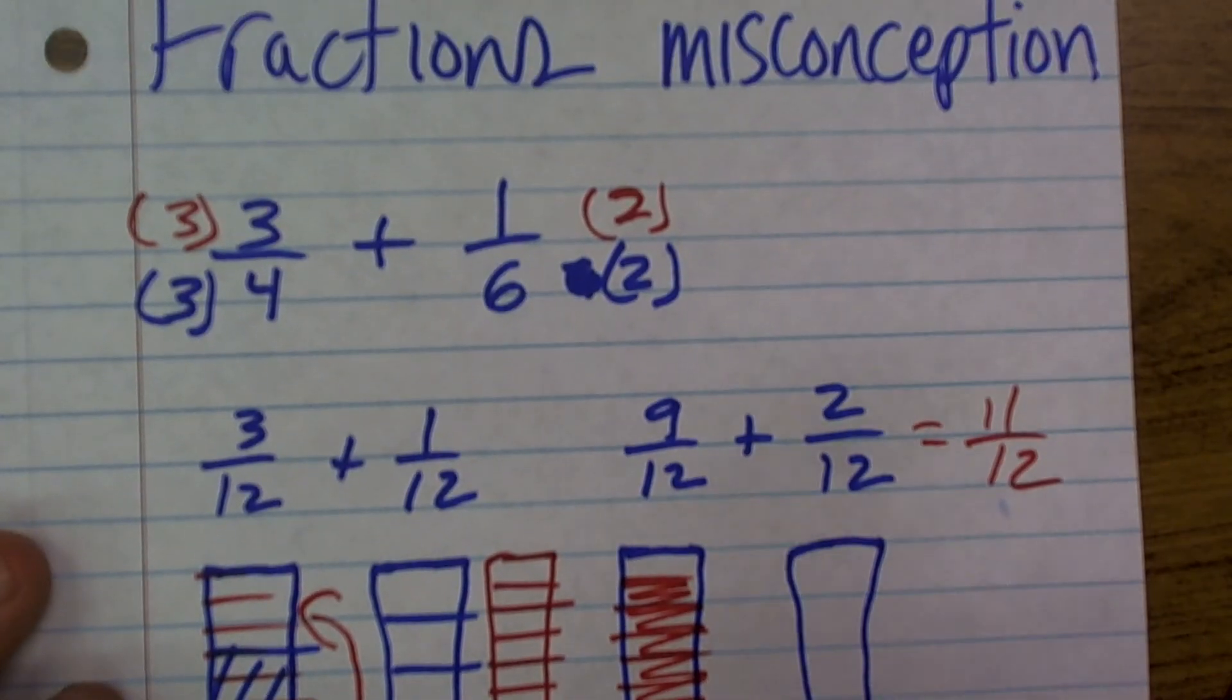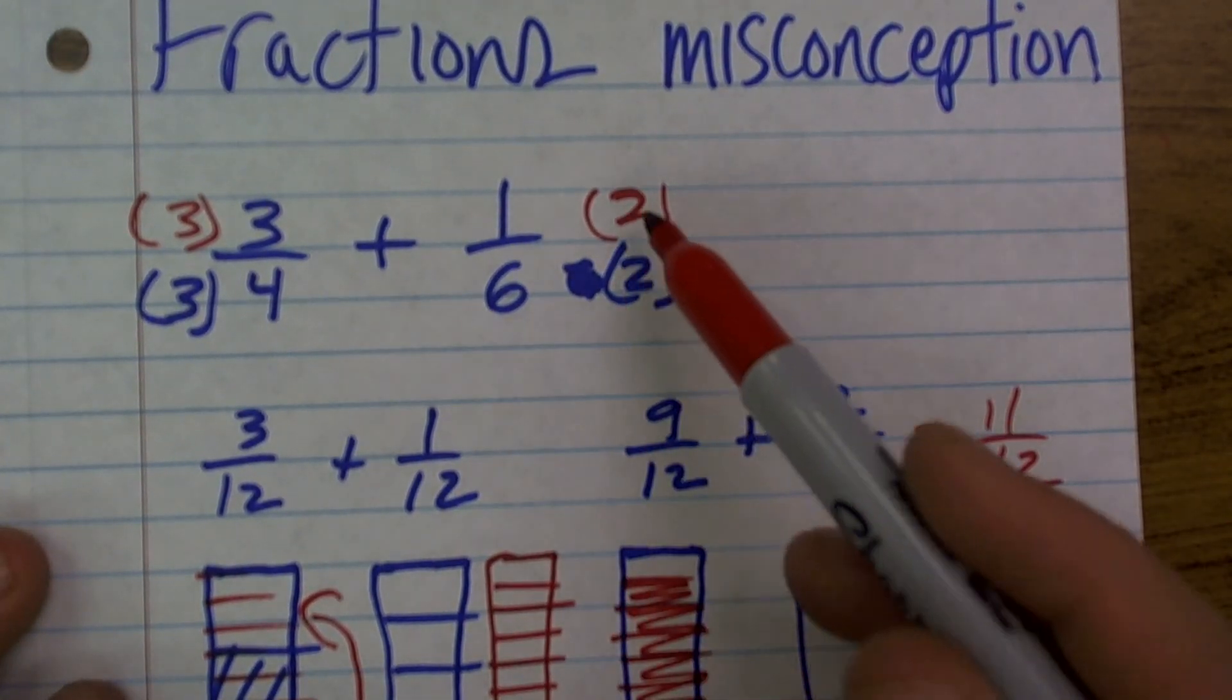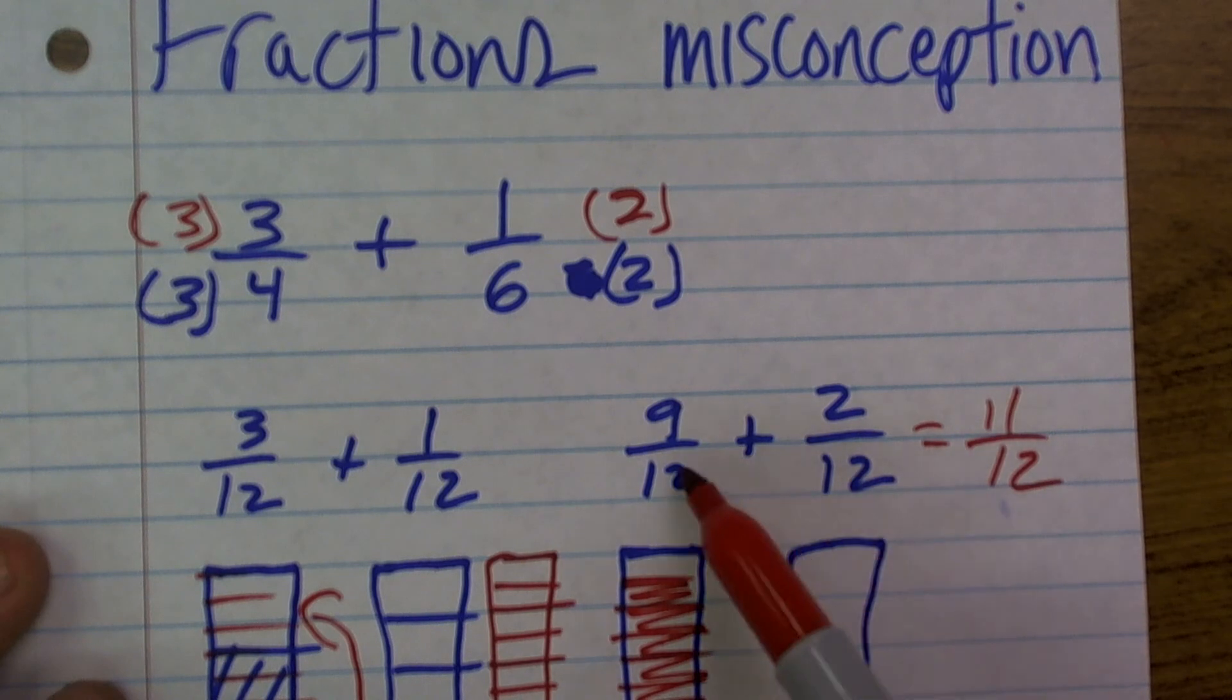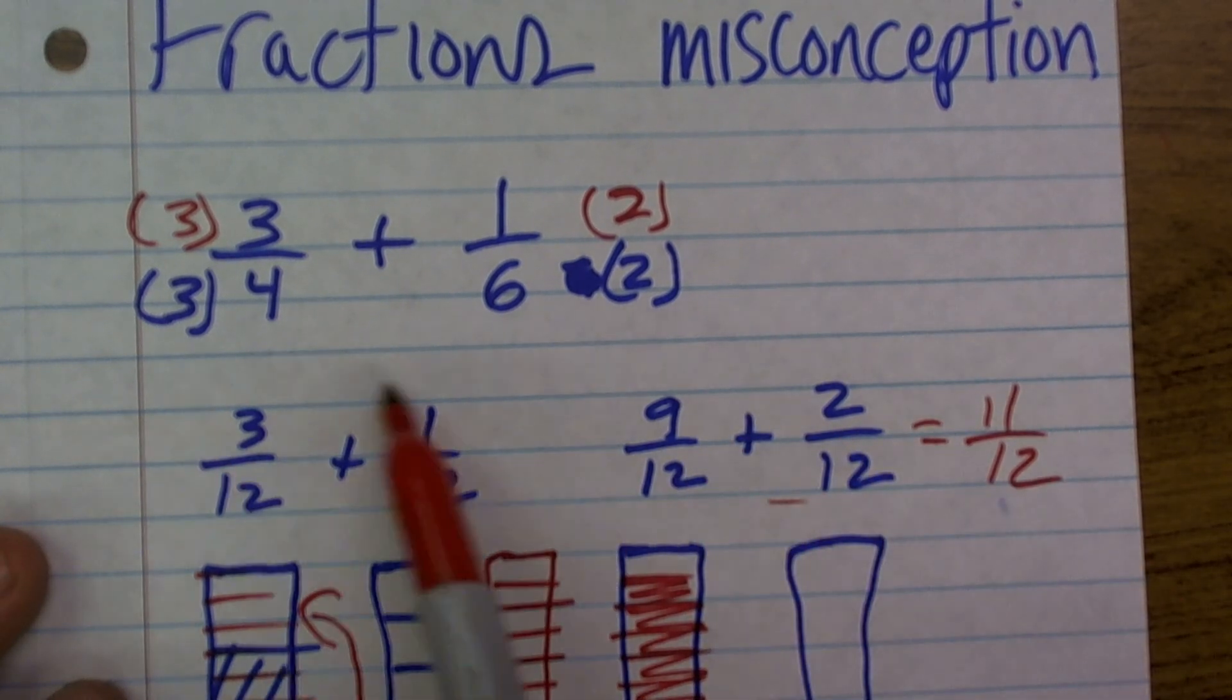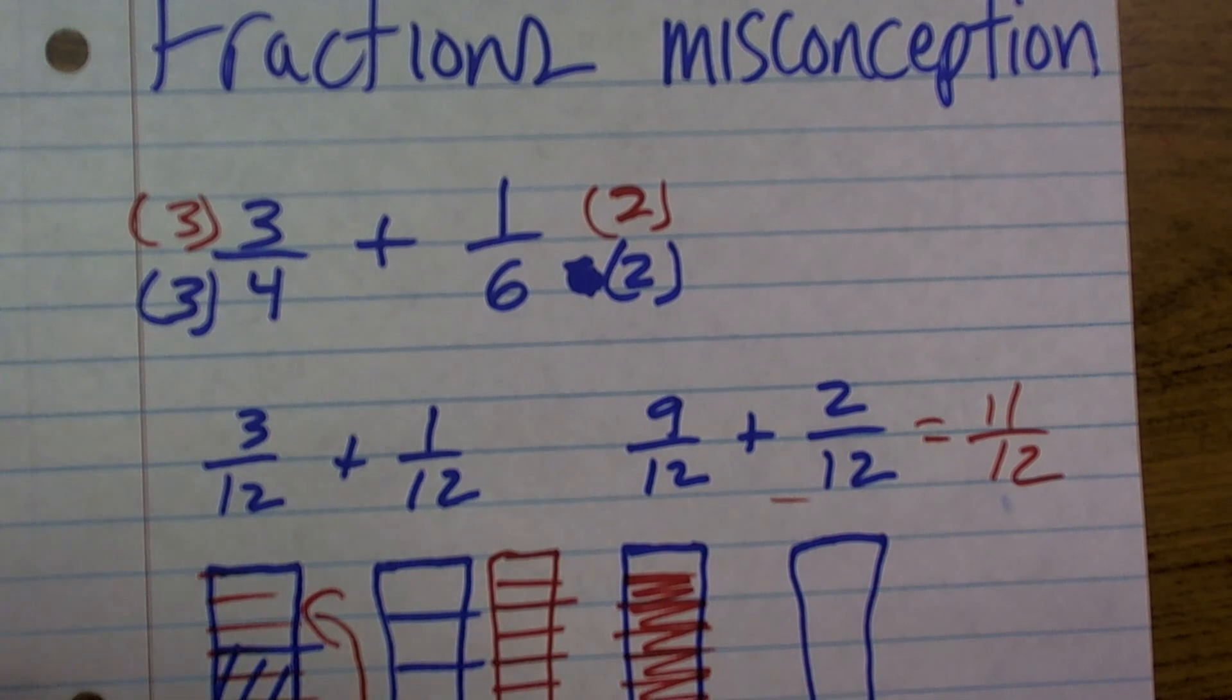So that's why it's very important to make sure that we multiply our numerator and our denominator by the same number so that we get our correct answer. If we just multiply our denominators, we're not going to get the correct answer.